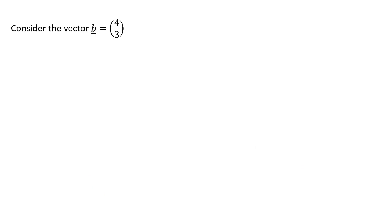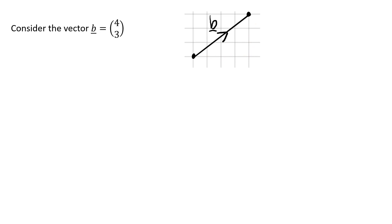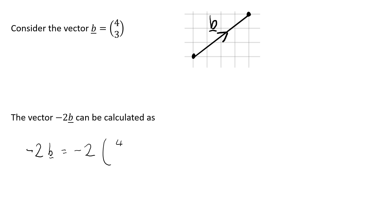Let's think about the vector b, which is (4, 3) — 4 along, 3 up. The vector -2b can be calculated as -2 lots of the vector b. So multiplying through, that's going to be (-8, -6).